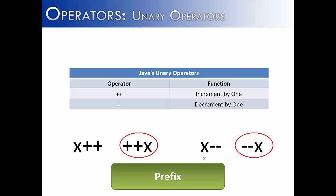Now you may be wondering why I have two sets of pluses and two sets of minuses. The reason is there are two types of unary operators. There are prefixes where the ++ or the -- goes before the value, and there's postfix operators which the ++ and the -- goes after the operator.